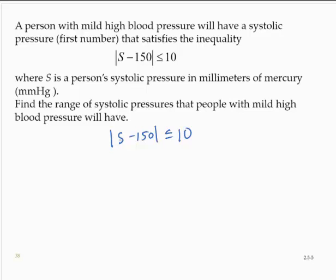Since the absolute value of s minus 150 is less than or equal to 10, that implies that negative 10 is less than or equal to s minus 150, which is less than or equal to 10.